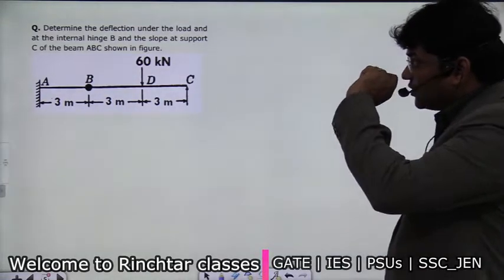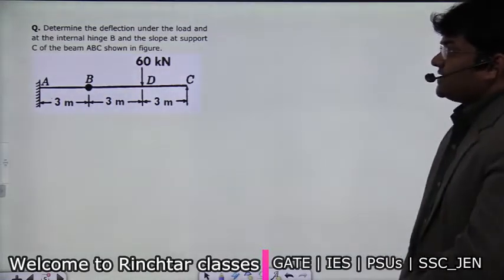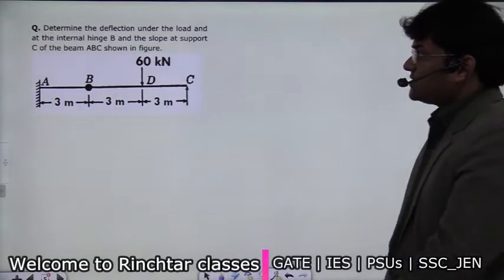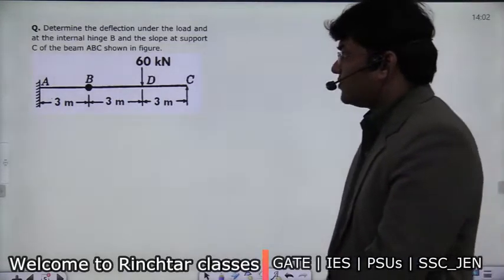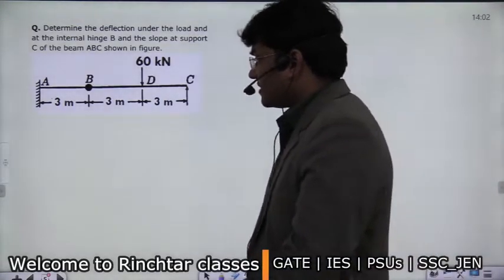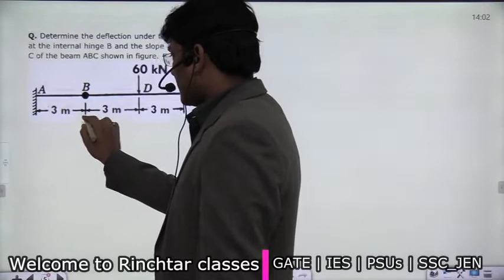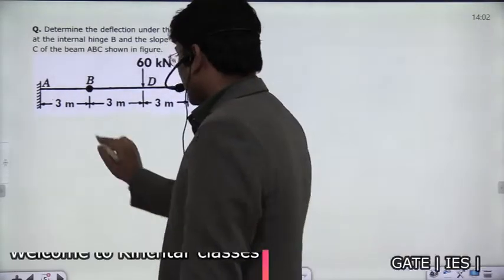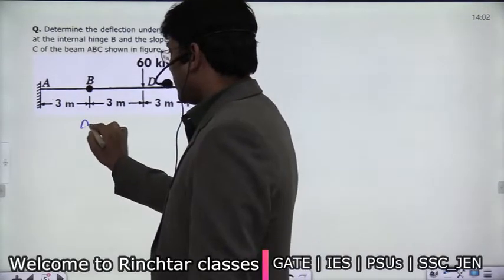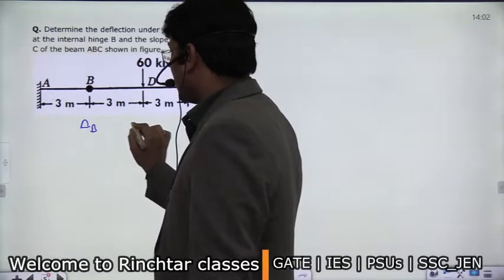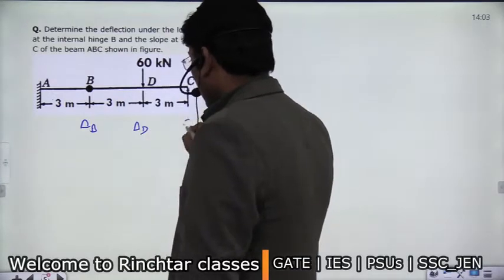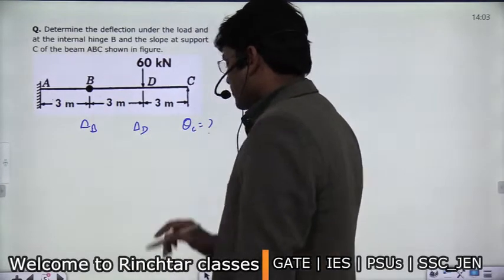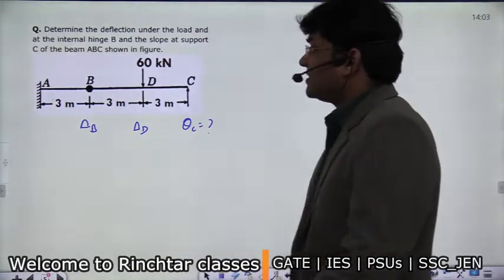Determine the deflection under the load at the internal hinge B and the slope at the support C. So you have to tell what is delta B, what is delta D, and what is the slope at this point. You have to answer three things for this question.